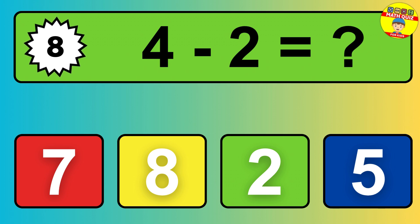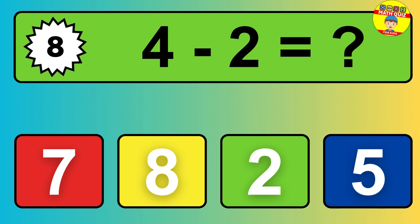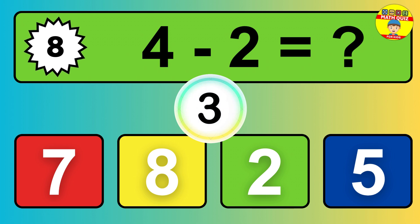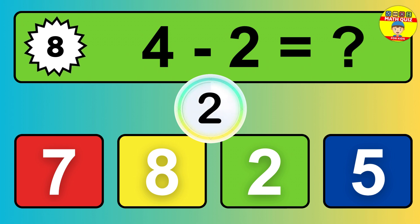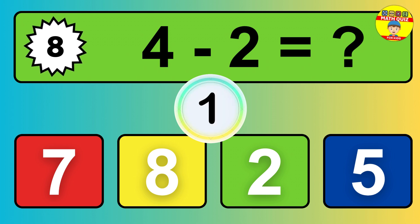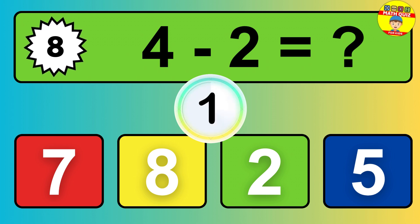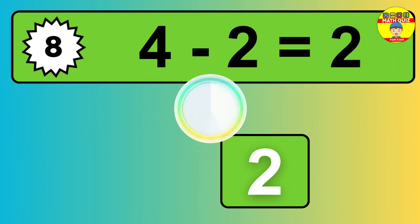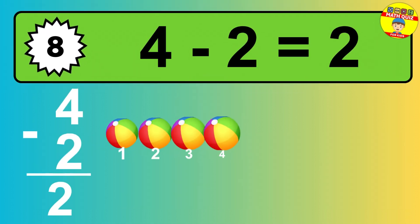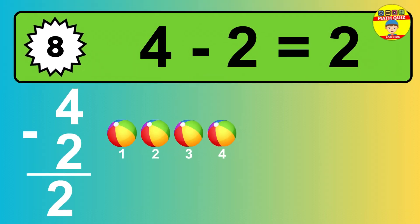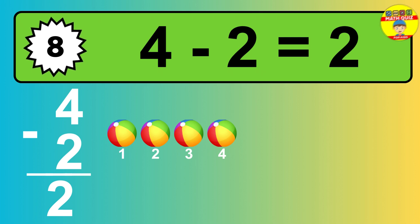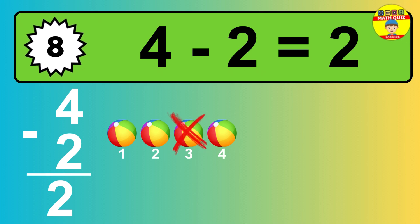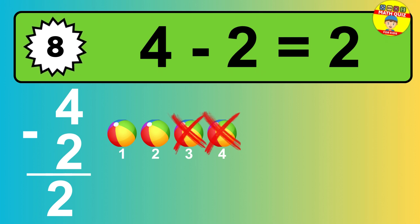Question 8: 4 minus 2 equals what? The answer is, 4 minus 2 is 2. Let's count it: 1, 2.